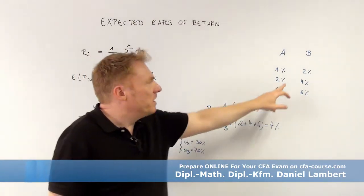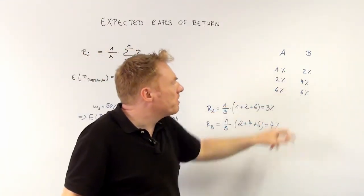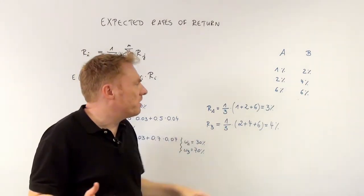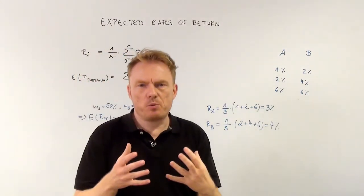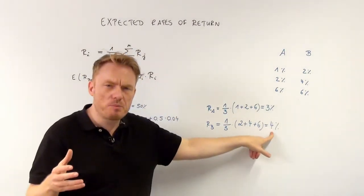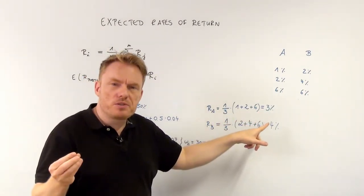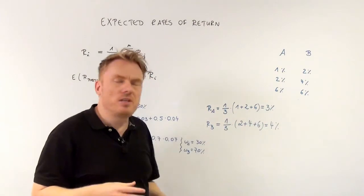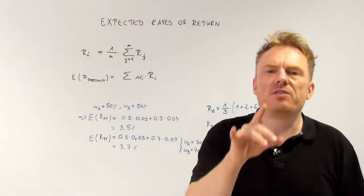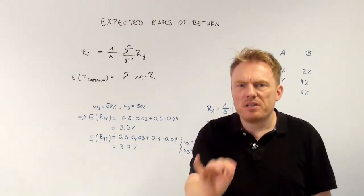Looking at share B, we have the same situation with different numbers. 2 plus 4 plus 6 equals 12; 12 divided by 3 is equal to 4%. So the expected rate of return of share B is 4%, whereas the expected rate of return of share A is 3%. That's the first result — we need to calculate expected rates of return for every different share.